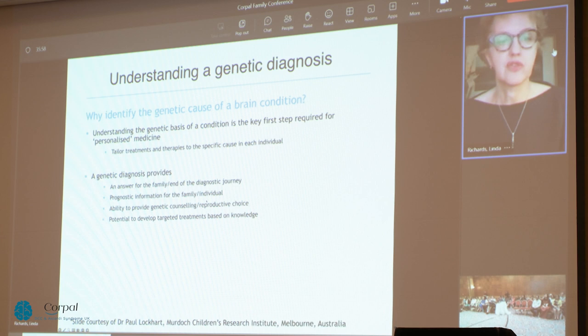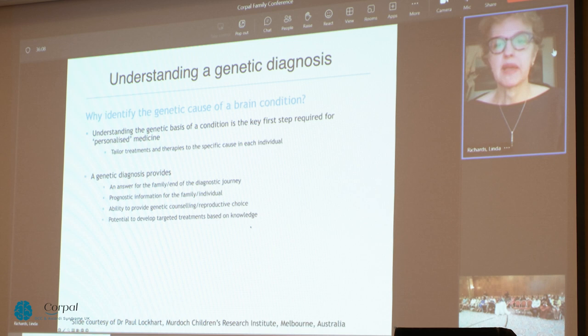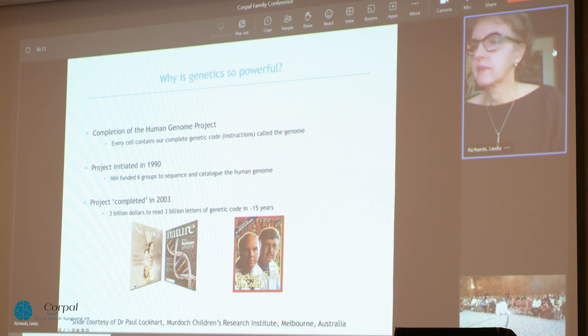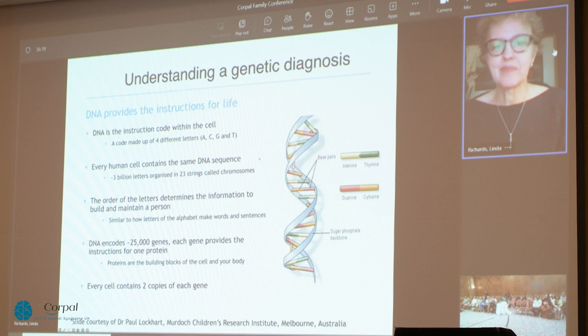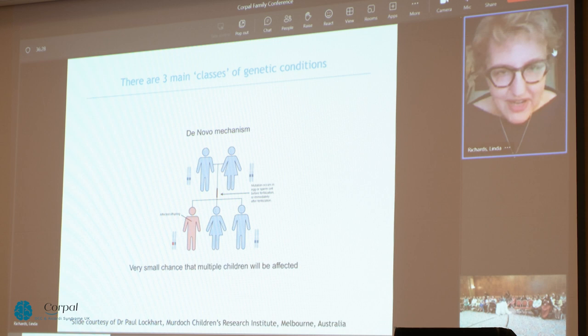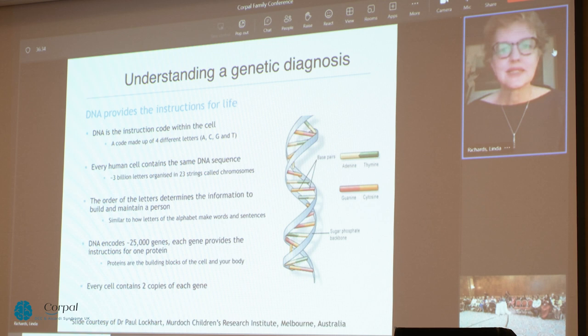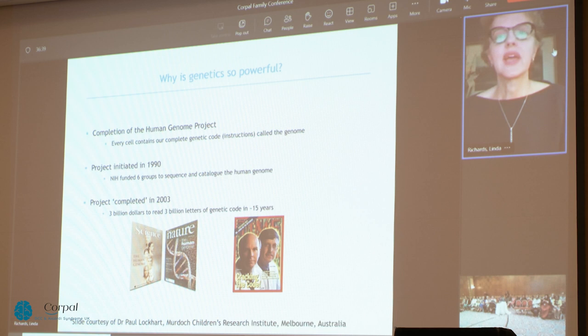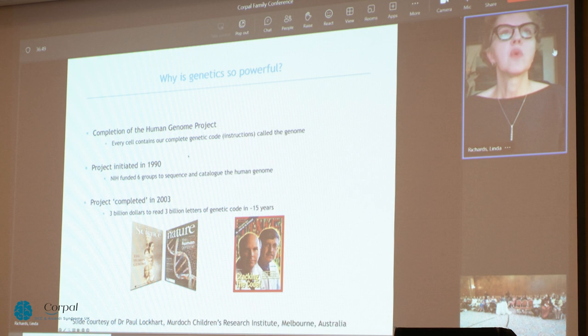I wanted to move on and talk about understanding a genetic diagnosis. Why identify the genetic cause of a brain condition? This is really the basis of the first step required for personalized medicine — to tailor treatments and therapies to the specific cause in each individual. A genetic diagnosis often provides an answer for the family, prognostic information, the ability to provide genetic counselling and reproductive choice, and the potential to develop targeted treatments. So why is genetics so powerful right now? The Human Genome Project was initiated in 1990 and finished in 2003, reading all three billion letters of the genetic code. It took 15 years.